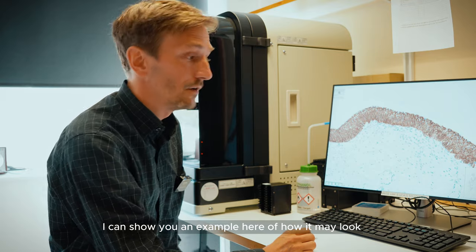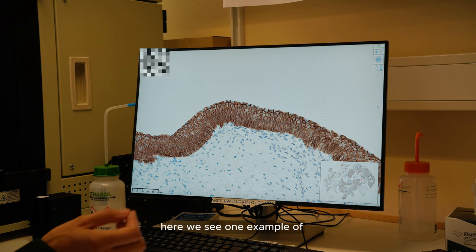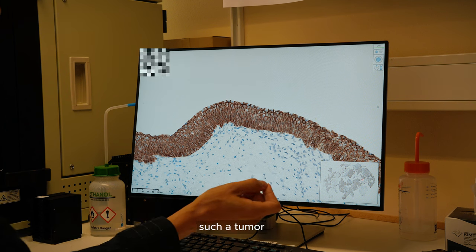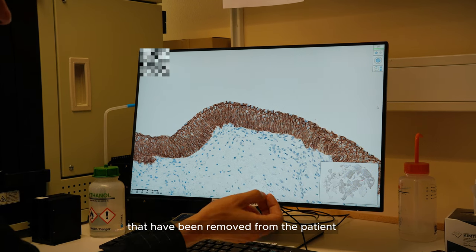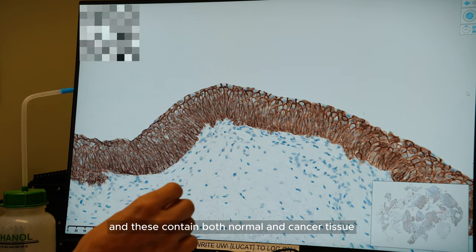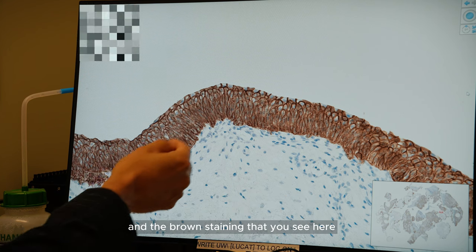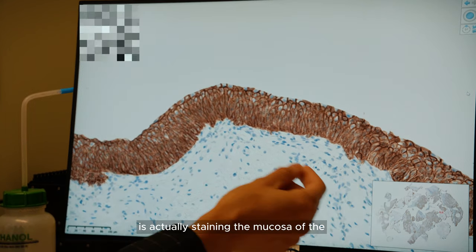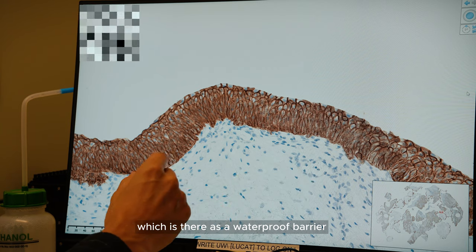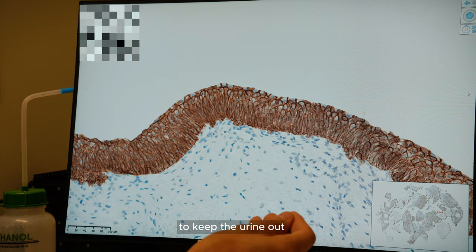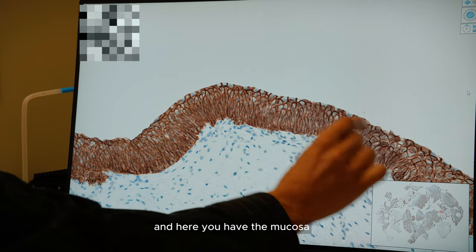I can show you an example here of how it may look. On the screen here we see one example of such a tumor where you can see down here many different tumor pieces that have been removed from the patient. These contain both normal and cancer tissue. In this case, you see the normal tissue and the brown staining that you see here is actually staining the mucosa of the lining of the bladder wall, which is there as a waterproof barrier to keep the urine out. In this case, the urine would be on this side and here you have the mucosa, and this would be the patient's bladder.